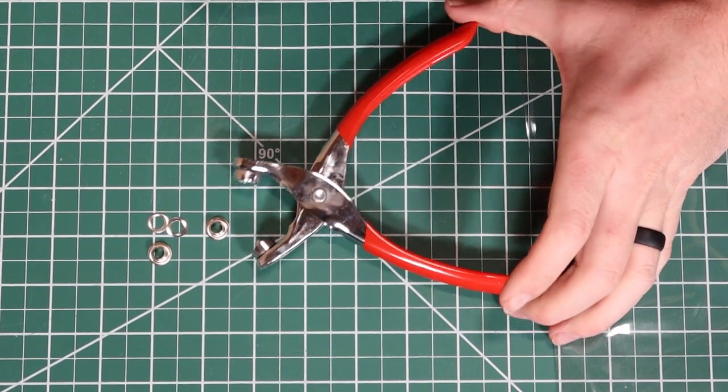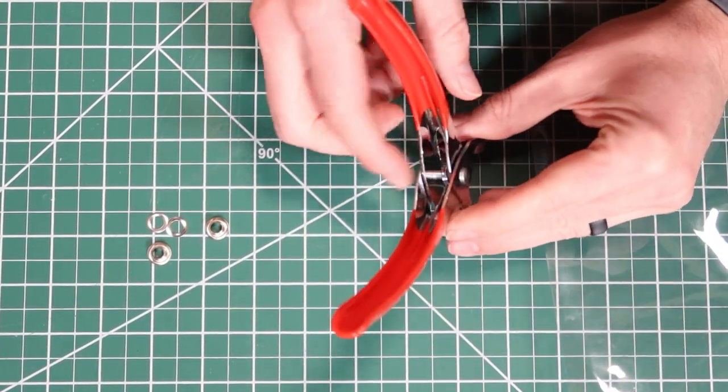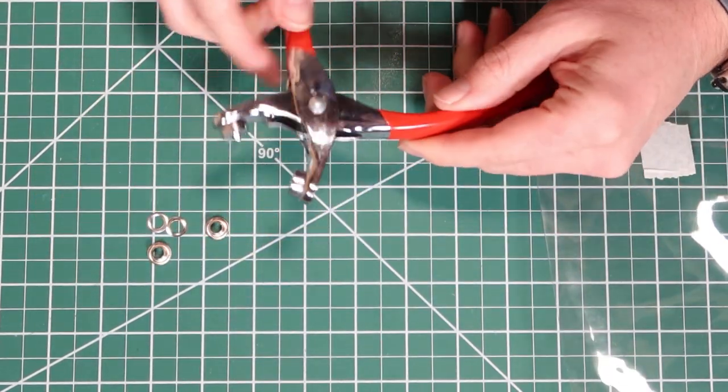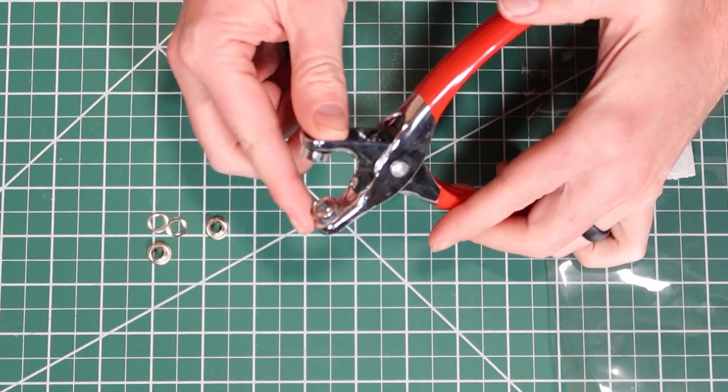Taking a close-up look at the tool, there is a rubberized handle for comfort. There's a spring inside that keeps this open all the time. On the business end, one side has a cone and the other side has a hole.